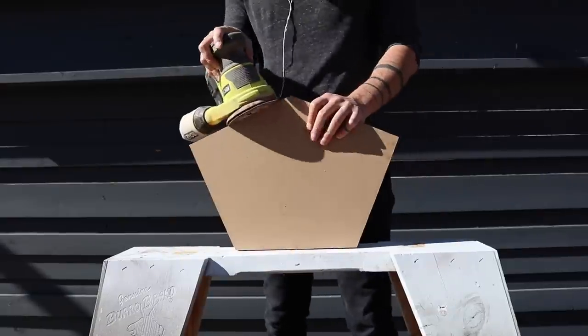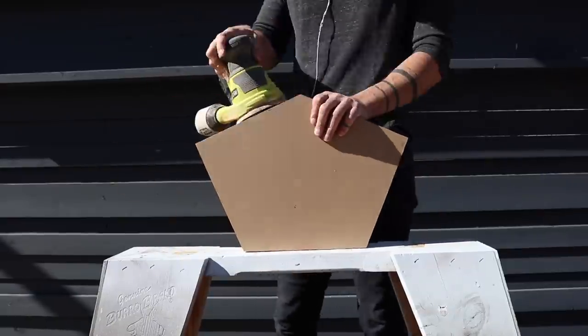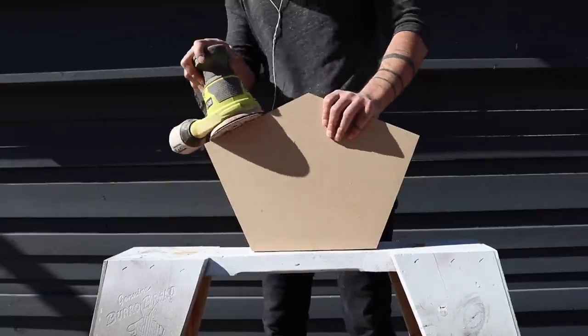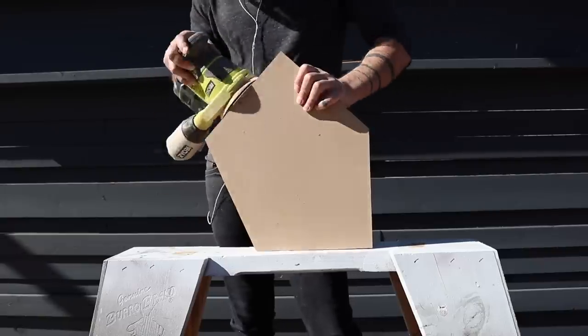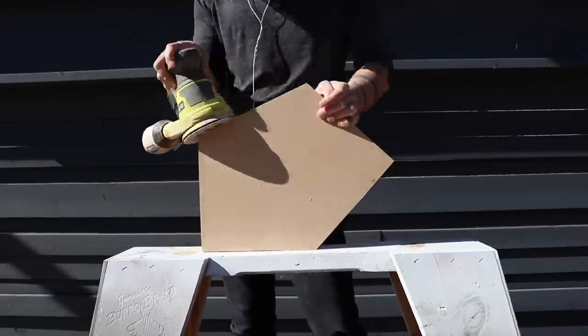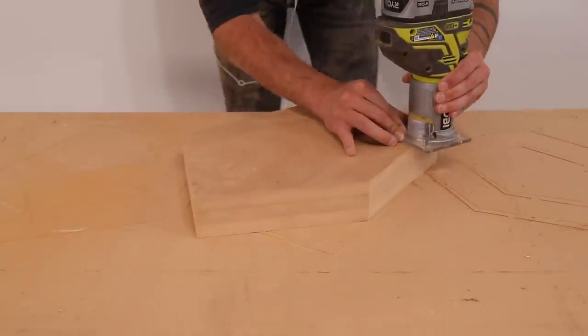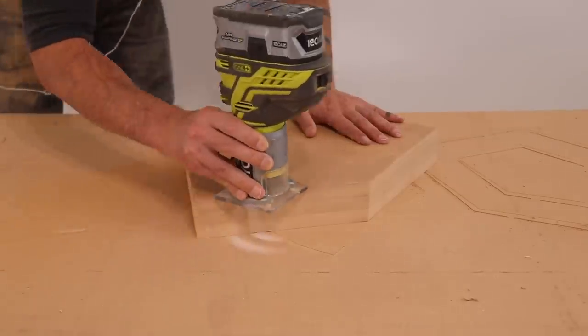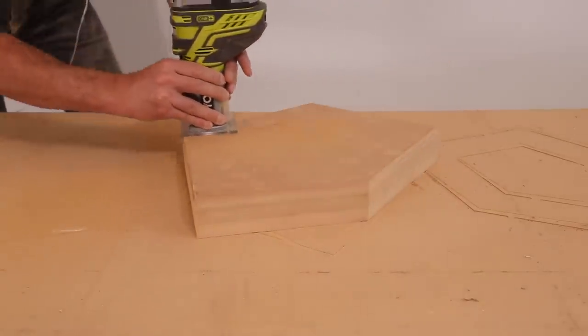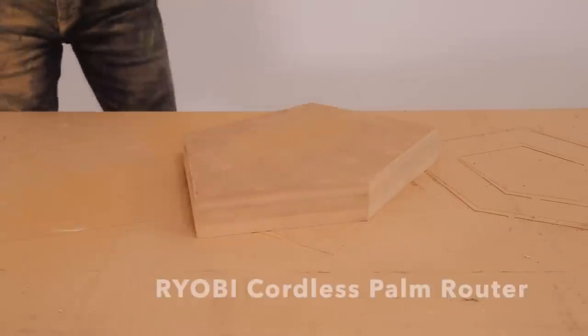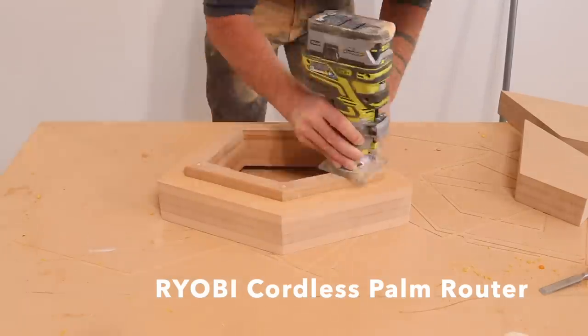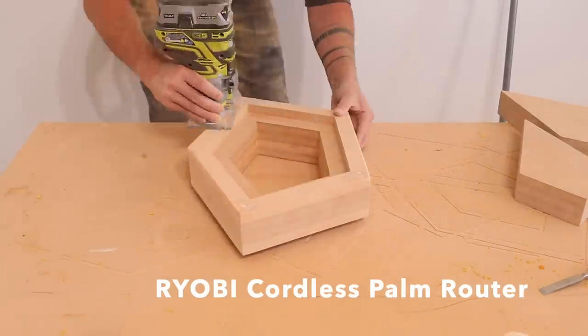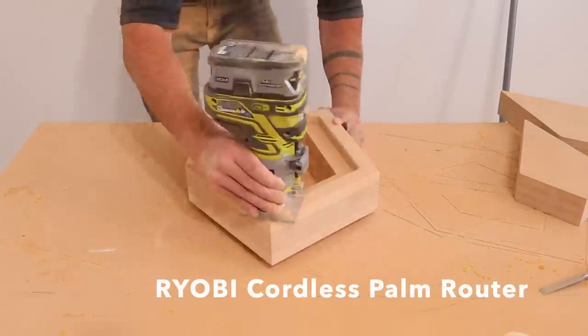Once all the glue and Bondo had fully cured, I used my orbital sander to sand down the edges and get everything nice and smooth by sanding it to 220 grit. I want the tops of the pavers to be comfortable on bare feet, so I used a round-over bit on my palm router just to give the top of the pavers about an eighth-inch radius. I also routed along the surfaces of the pipe sections that'll serve as the planters, just so I don't get crumbly edges.